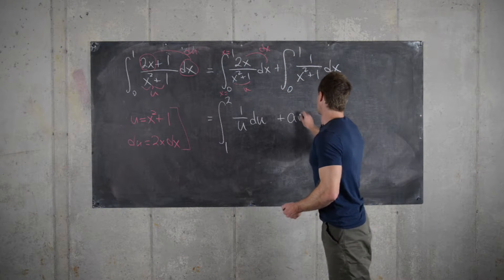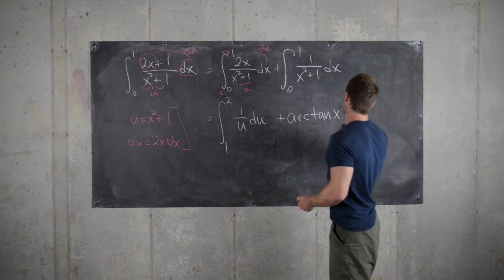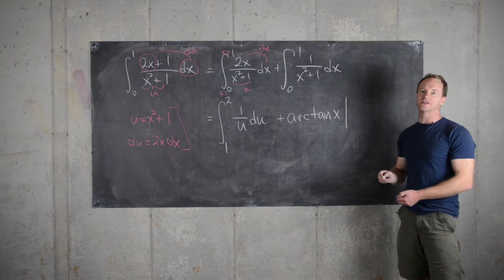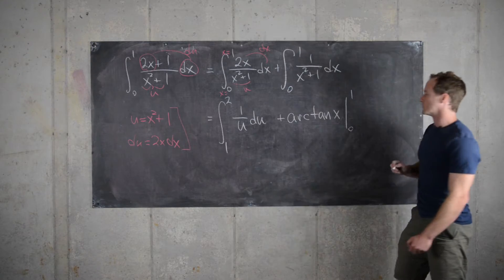So if you look that up, you'll get that this is the arctangent of x, in other words, the inverse tangent function, evaluated from 0 to 1.